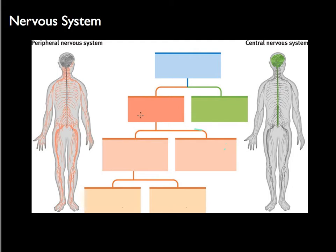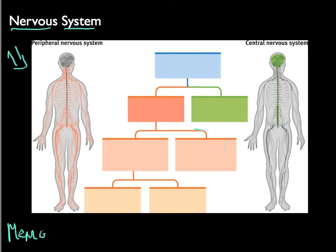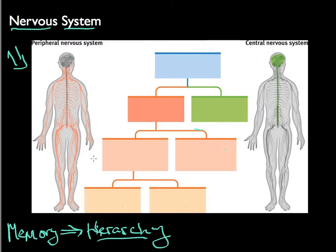Let's turn our attention now to the actual nervous system itself. One of the most effective memory tools we have for memorizing and remembering things — which we'll talk about more when we discuss memory — is something that is simply a hierarchy. And that's essentially one of the keys in understanding the nervous system itself. We start out on top with the nervous system, and it breaks down into component parts that you can then relatively easily remember.